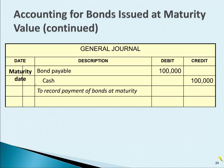On maturity date, the bonds payable is going away. This will balance out the account to zero, and then we pay the $100,000 cash to the bondholders to retire the bonds.